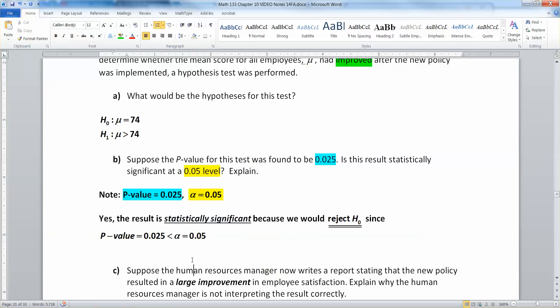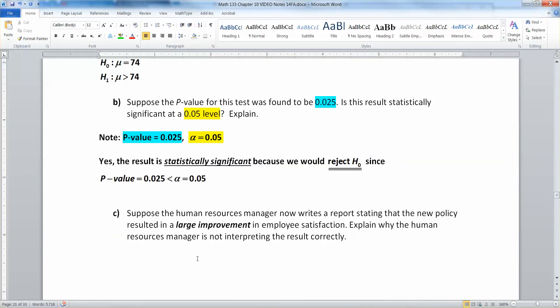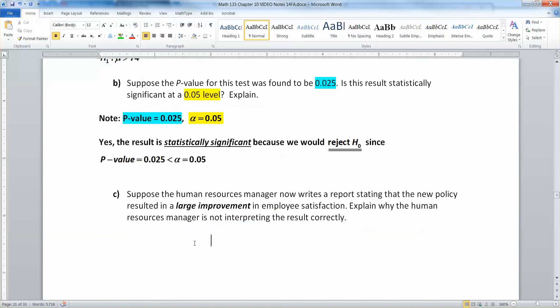Now suppose the human resources manager, if you have never worked at a company that's the person in charge of all the people that work there, kind of in charge of hiring, firing, getting documents run, that kind of thing. The human resources manager now writes a report stating that the new policy resulted in a large improvement in employee satisfaction. And I bolded and highlighted this - large improvement. Explain why the human resources manager is not interpreting the results correctly.